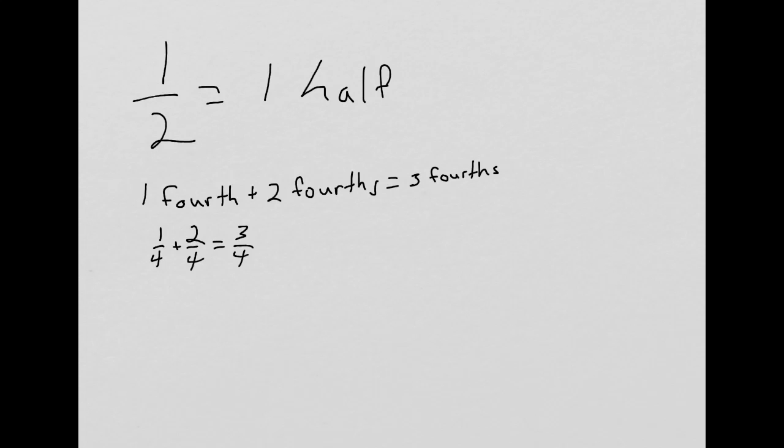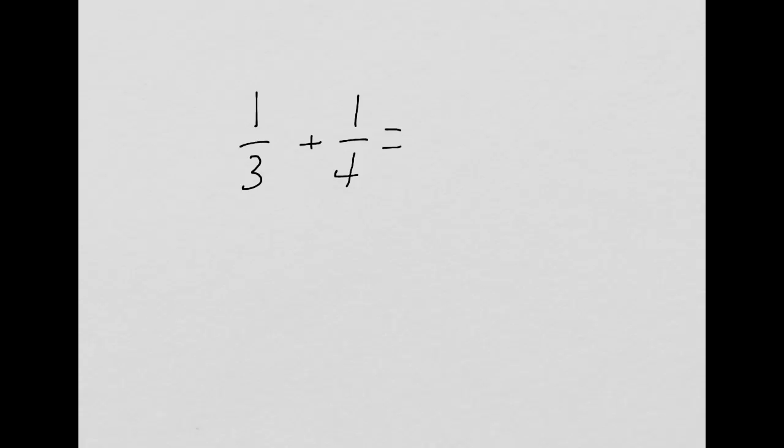Where it gets more complicated is when we have fractions that don't have like denominators. For example, here with 1/3 + 1/4. If I write it in unit form, we immediately see the problem. 1 third plus 1 fourth equals... We don't know how to do that. That's like adding an apple to a banana.